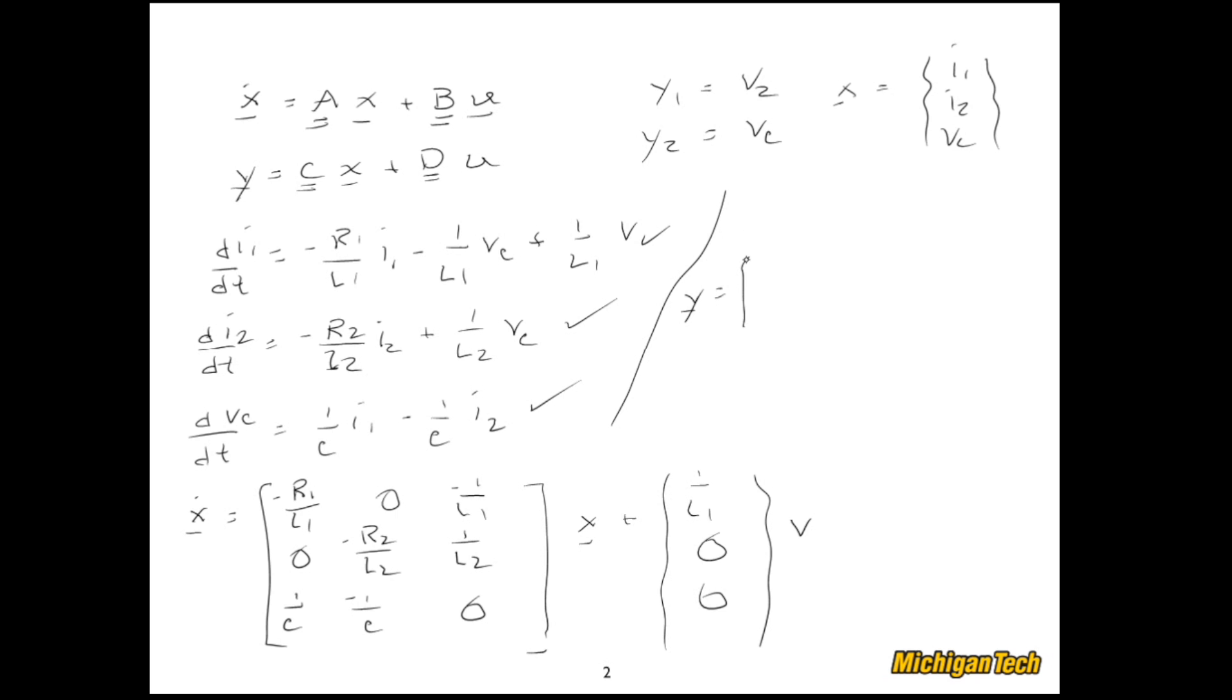So for the A matrix: negative R1 over L1, 0, negative 1 over L1; 0, negative R2 over L2, 1 over L2; 1 over C, negative 1 over C, 0. My B matrix is 1 over L1, 0, 0. For V2, I have 0, R2, 0. And Vc is just my third state, so 0, 0, 1. My D matrix is just 0, 0. I've got it: my A, B, C, and D matrices.